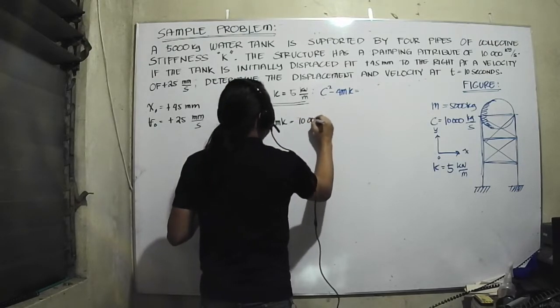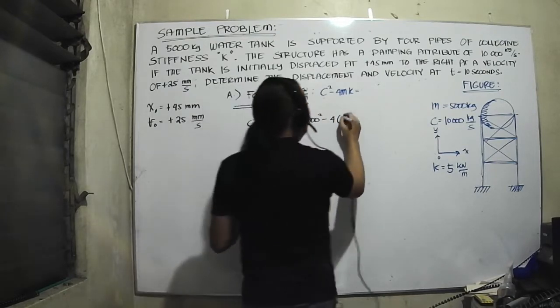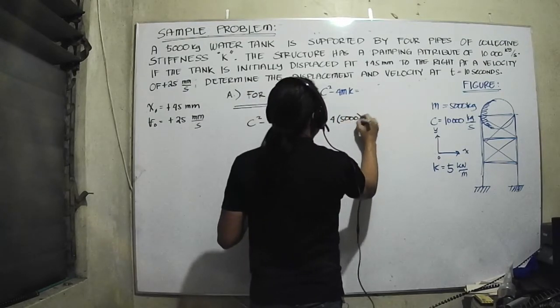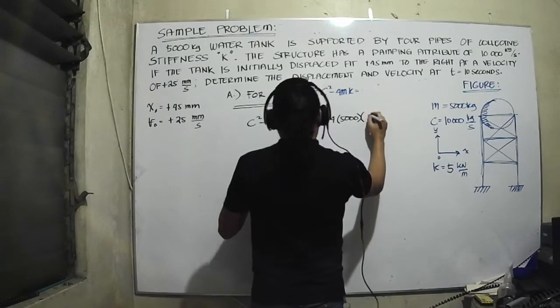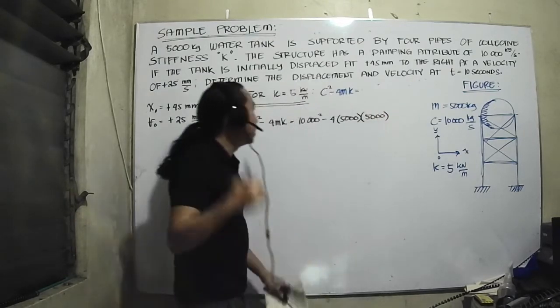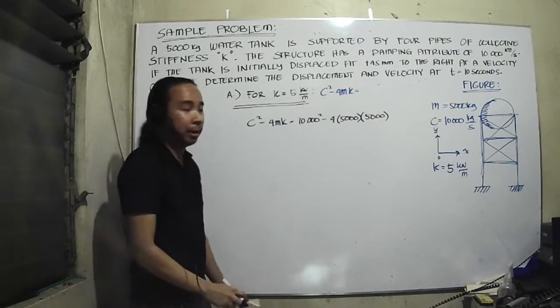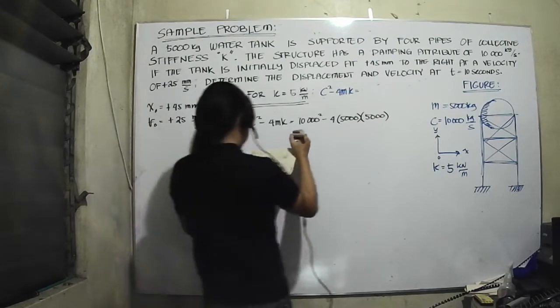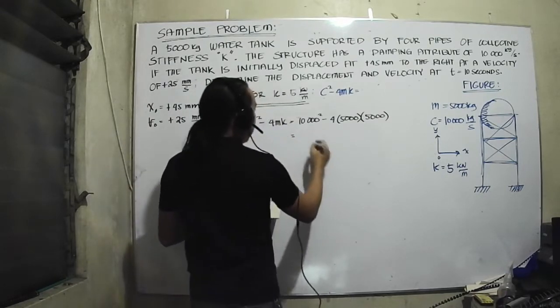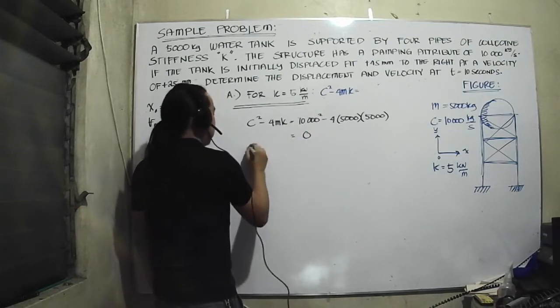C squared 4k, okay. Need to test first so it's a damping system. We have to examine this so we have 10,000 squared minus 4 times m is equal to 5,000. After converting the units as I explained in the previous video, we will discover that this is actually equal to 0.